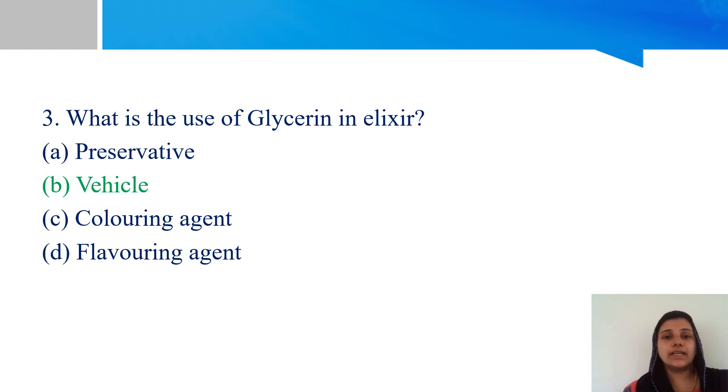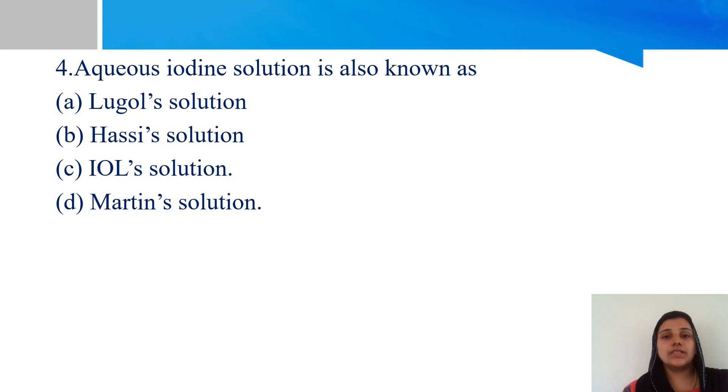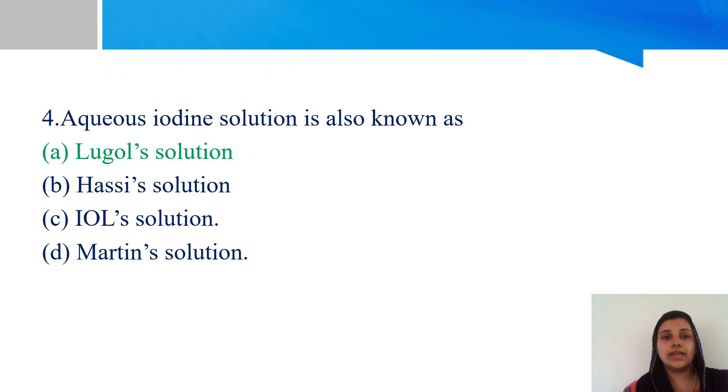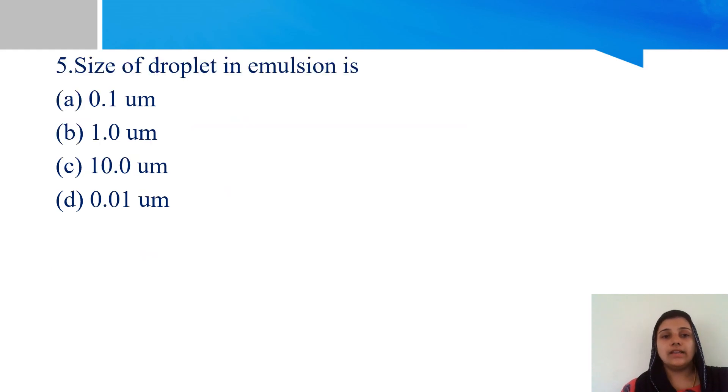Fourth question. Aquacidine solution is also known as Legal solution, High-all solution, or Martin solution. The question is about aquacidine solution. Option A, Legal solution, is the right answer. Iodine has different types of solutions: aquacidine, weak iodine, strong iodine solution. Aquacidine has water present with iodine and potassium iodine in specific concentration ranges.